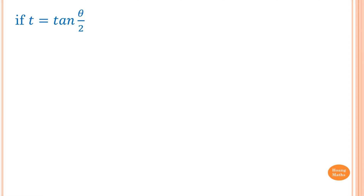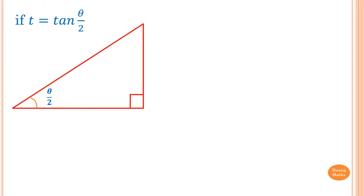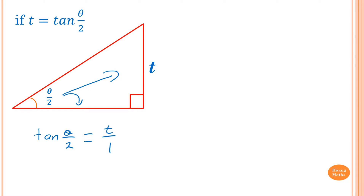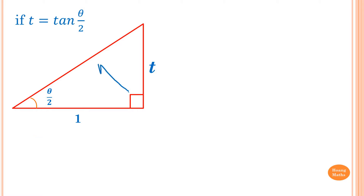If t is equal to tan(θ/2), let's construct a triangle. tan(θ/2) equals t, or t over 1. So the opposite side is t and the adjacent side is 1.